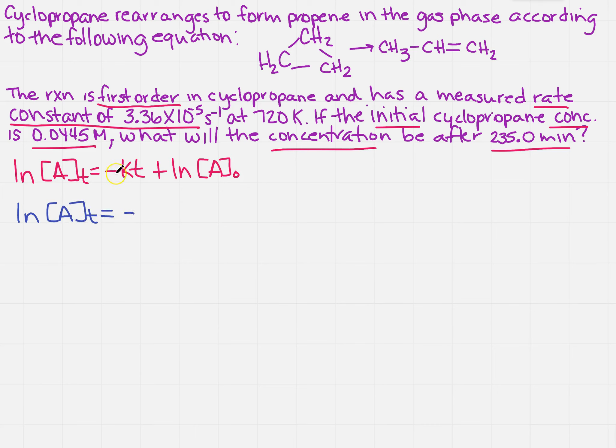We've got a minus. Now, K. Well, we said the rate constant is, so that's going to be 3.36 times 10 to the minus 5th. Now, it's inverse seconds, so I'm going to go ahead and just write it over S.